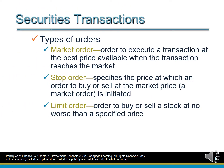Securities Transactions — Types of Orders. Market order: orders to execute a transaction at the best price available when the transaction reaches the market. Stop order: specifies the price at which an order to buy or sell at the market price is initiated. Limit order: an order to buy or sell a stock at no worse than a specified price.